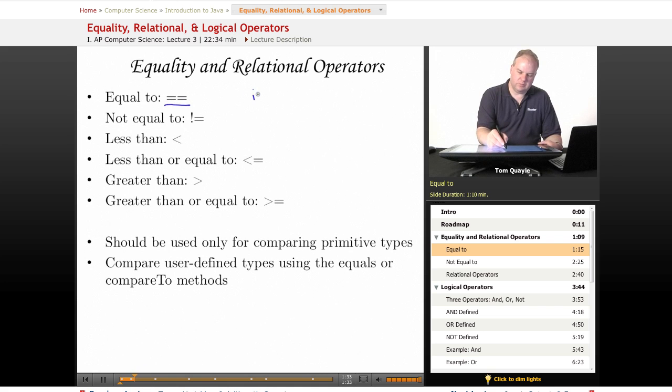For example, i equals 10. A single equal sign assigns the value on the right-hand side to the variable on the left-hand side. Equal equal tests the two values for equality. So, this expression assigns a value of 10 to i. This expression compares if the value of i is equal to 10.